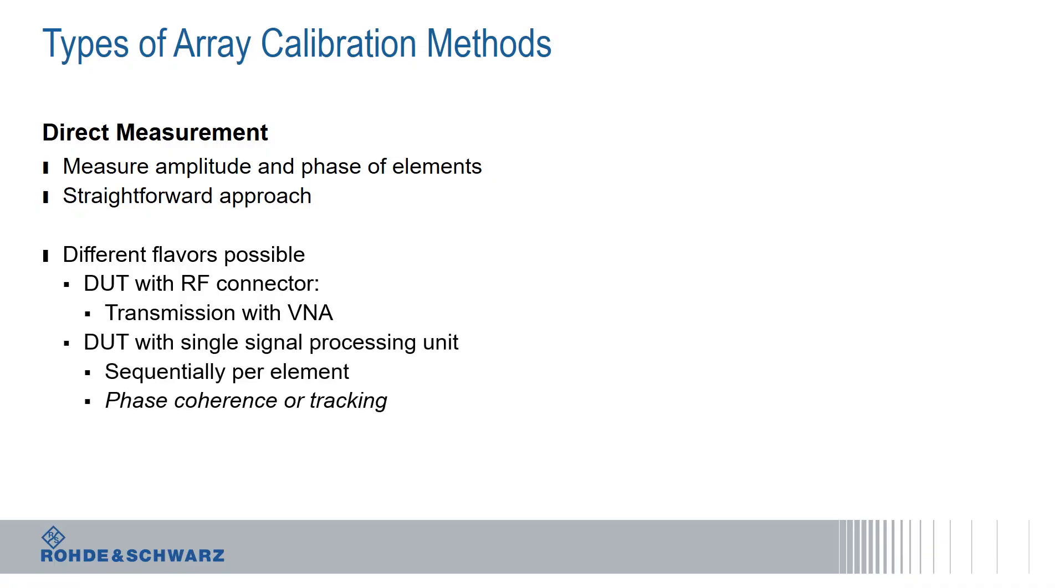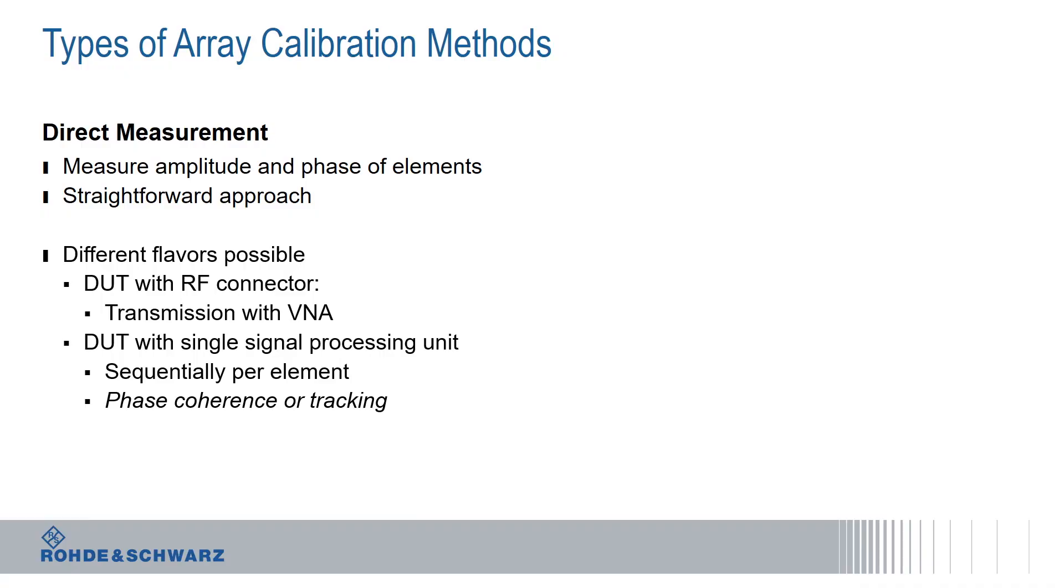We hope to have a DUT which has some signal processing capability, otherwise it would need a connector anyway. The DUT sequentially applies the signal, some kind of test signal, CW modulated, it's up to the user, to each element. And then we measure the receive power and phase that we get in our receive set. Again, conducted or over the air, both are possible.